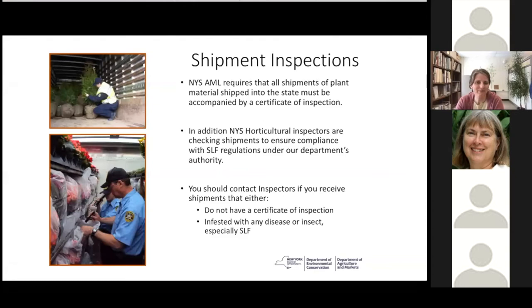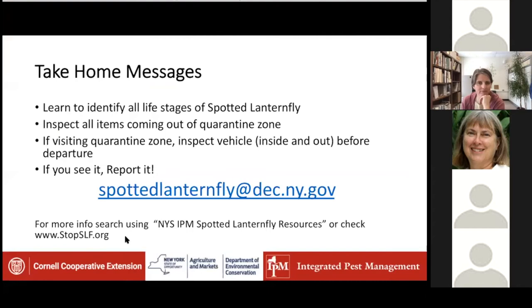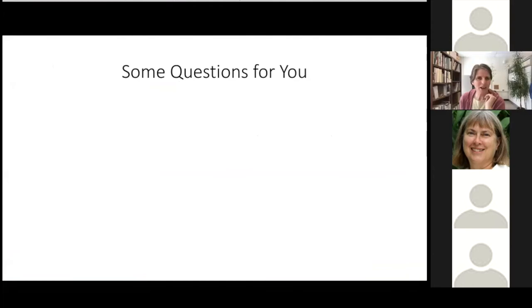Shipment inspections are being conducted. Any plant material shipped into New York State must have a certificate of inspection pursuant to Article 14. If you're receiving plant material or other products from the quarantine area, make sure you have that permit or certificate of inspection and inspect the material carefully for any signs or symptoms of spotted lanternfly. If you don't have the permits, call us so we can work with that out-of-state grower to get into compliance so they're not inadvertently vectoring spotted lanternfly. The biggest take-home message: report it, and make sure you're compliant with the quarantines in place.